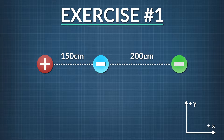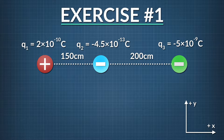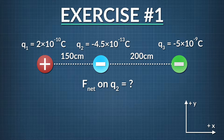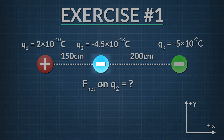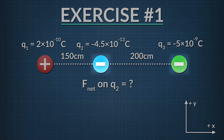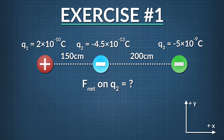We're told the charge of each one. Knowing electric force has both magnitude and direction, what is the net electric force on the middle charge, q2? To find out, we need to compute the electric force on q2 due to q1, the electric force on q2 due to q3, and then add them together to solve for the total electric force.